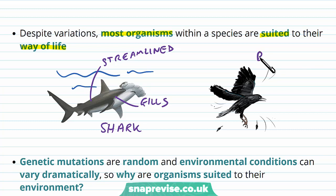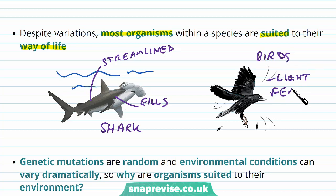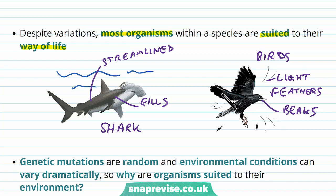Similarly, birds for example are lightweight, they have feathers to fly, and they have beaks to hunt and find things like nuts and insects in the ground. So overall, when you look at a species, you can see how through time it's become adapted to live in its particular environment, and the way that it does this is through evolution.